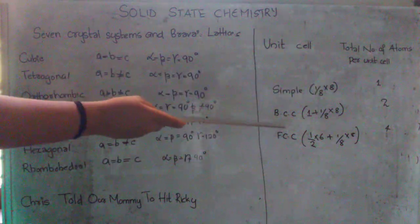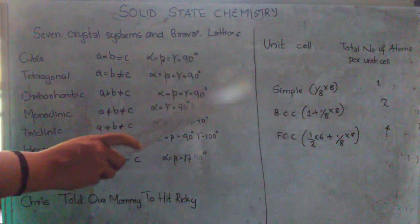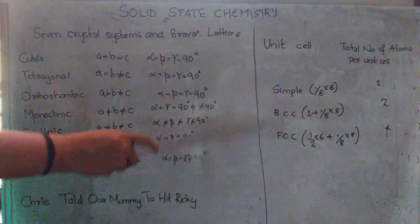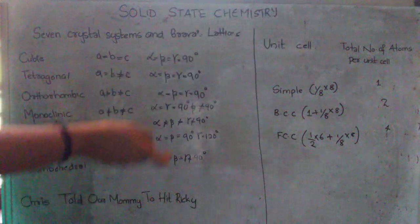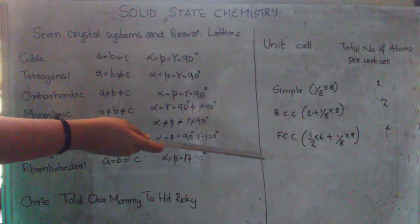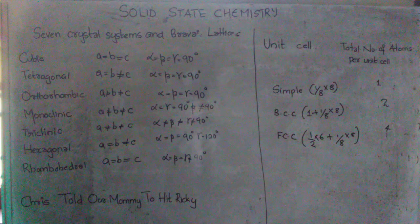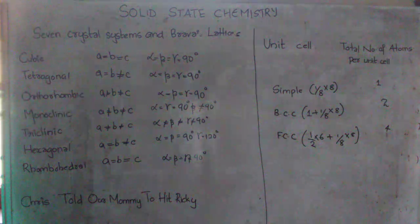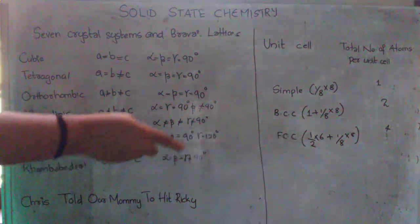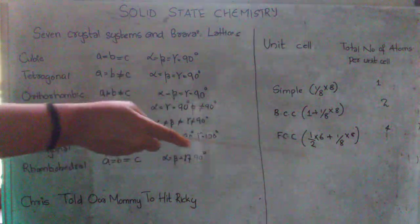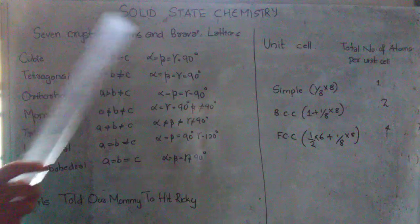Then BCC it will be 2. That is 1 body center will be there. One particle occupying the body center and 1/8 into 8 will be the contributions in the corner. Next FCC that is face centered cubic. 1/2 will be the contribution to each face and then there are 6 faces. Therefore, 1/2 into 6 which is 3 plus the corner contributions which adds up to a sum of 4.